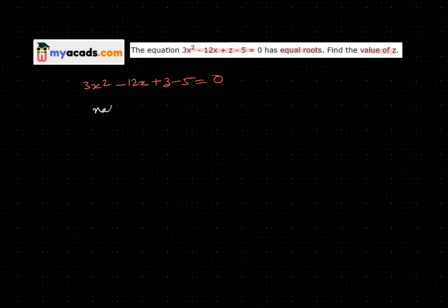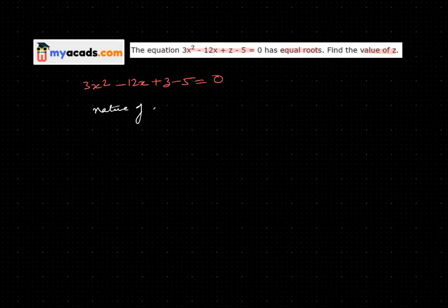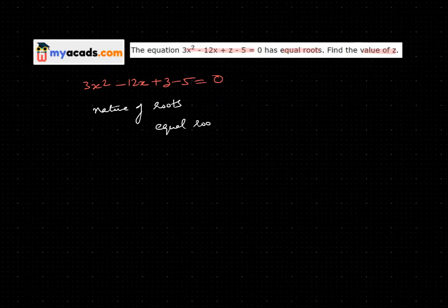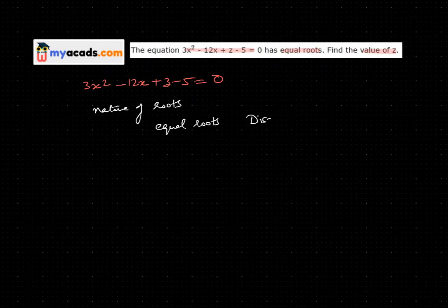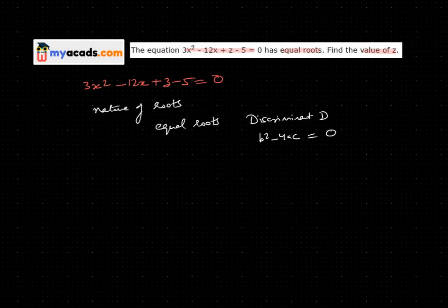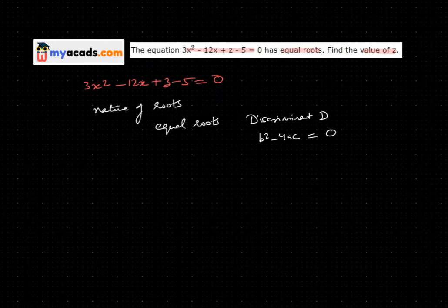For the nature of roots, when the roots are equal, my discriminant D is b squared minus 4ac equals 0. So if I have equal roots in this case, then b squared minus 4ac is equal to 0.